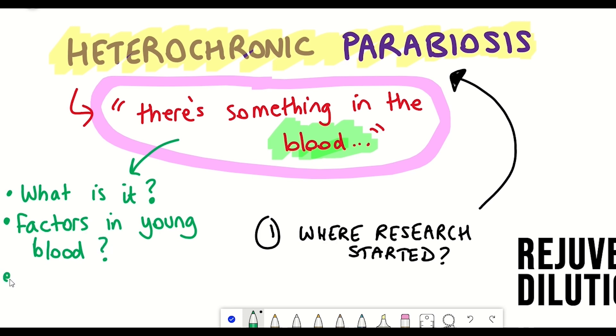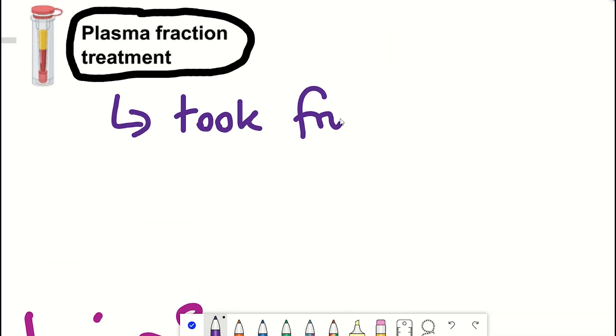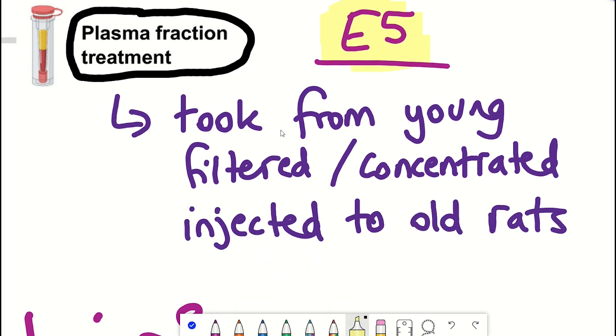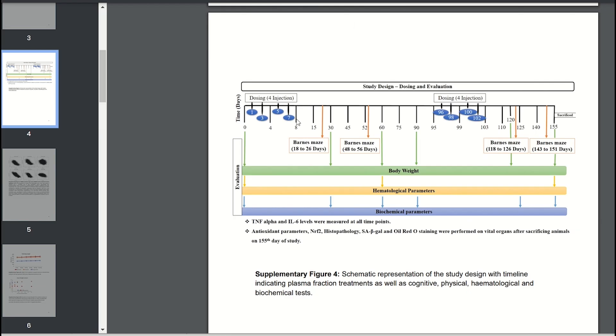So long story short, he set up a study to inject old rats with concentrated blood plasma. This concentrated blood plasma was called E5. Rats beginning at two years old were then injected four times with this E5 over eight days and then received the second dose later on at day 95.